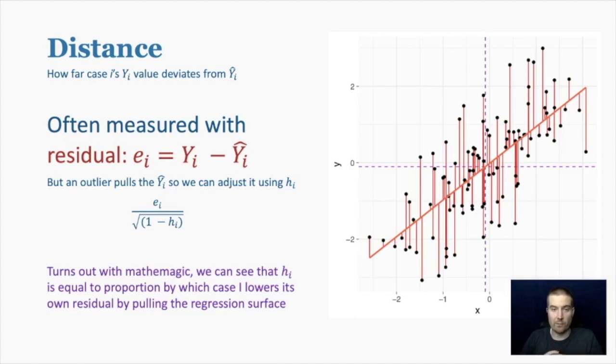I like to call this math the magic because somehow, just because it's math, you actually can see that the hat value is equal to the proportion by which case i lowers its own residual by pulling the regression surface or the line up to it. It's weird, but it's true. So the hat value is measuring basically how much that point is moving the line towards it. It's proportional to that.